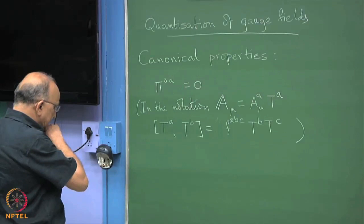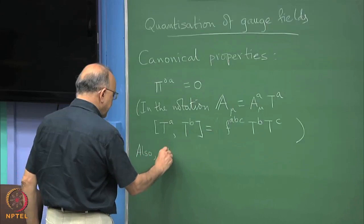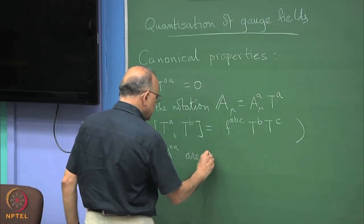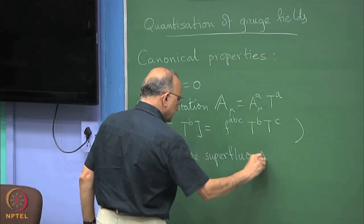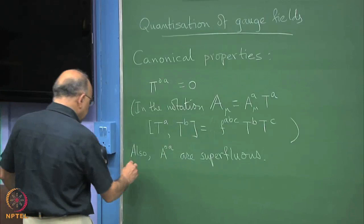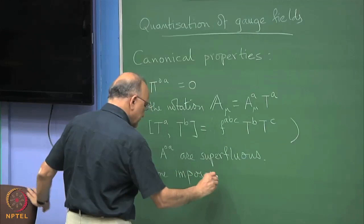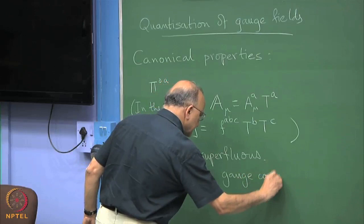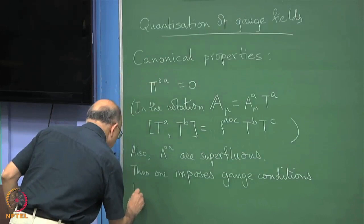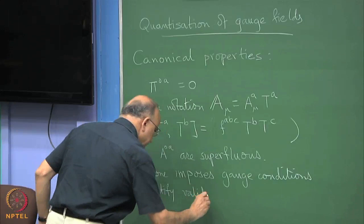We also saw that in many a sense the A₀ are also 0, in the so-called Coulomb gauge.